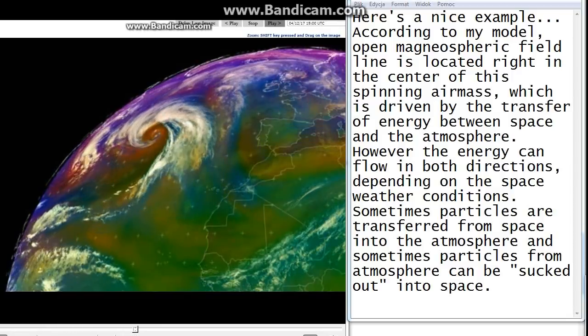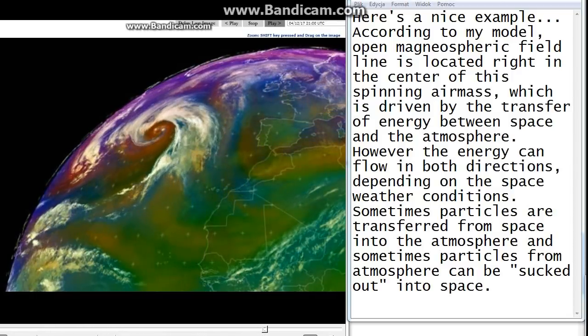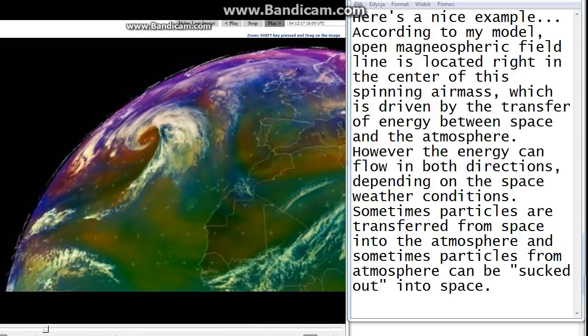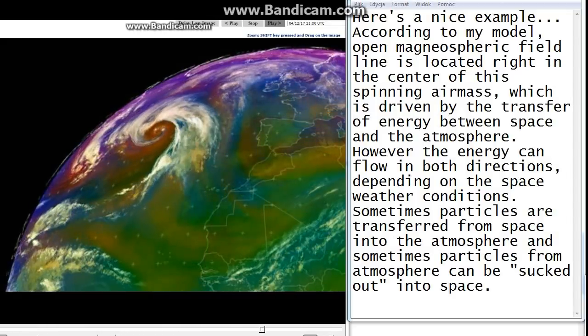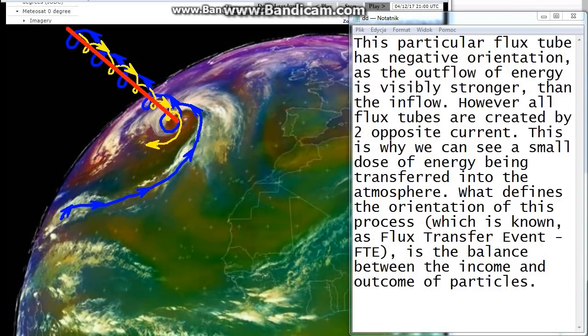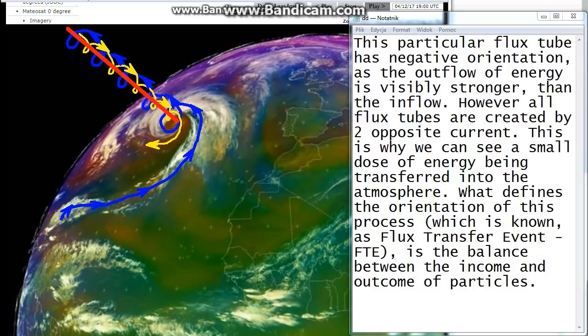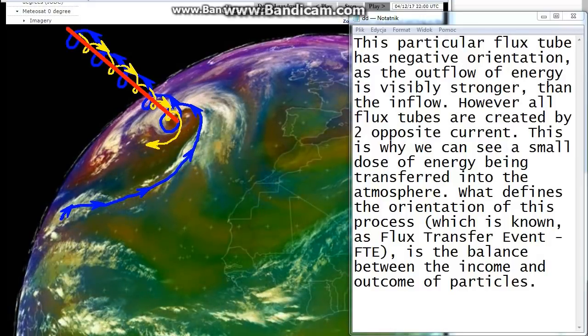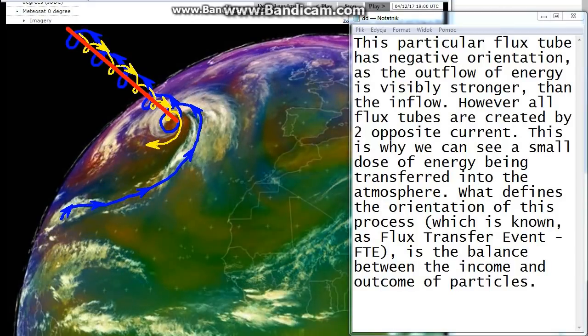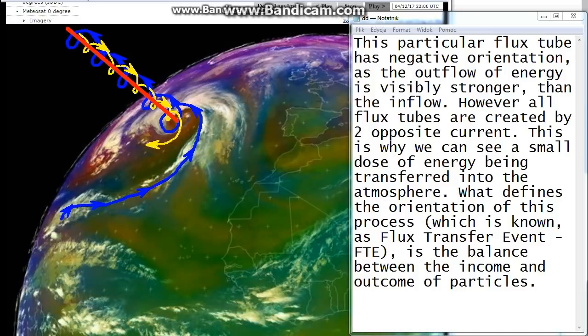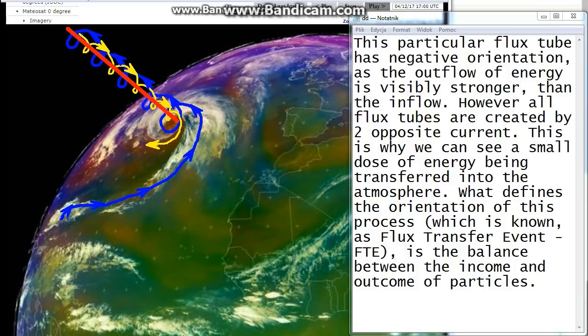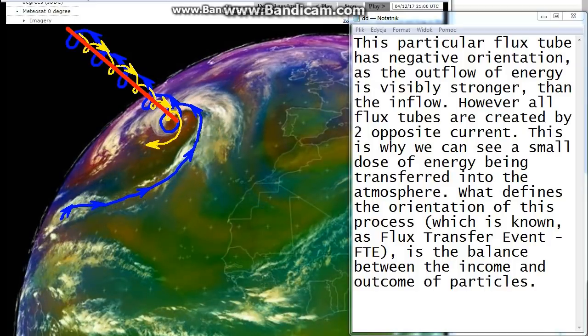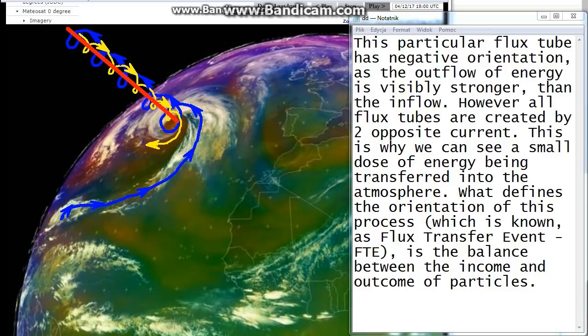However, the energy can flow in both directions, depending on the space weather conditions. Sometimes particles are transferred from space into the atmosphere and sometimes particles from atmosphere can be sucked out into space. This particular flux tube has negative orientation, as the outflow of energy is visibly stronger than the inflow. However, all flux tubes are created by two opposite currents. This is why we can see a small dose of energy being transferred into the atmosphere. What defines the orientation of this process, which is known as flux transfer event, FTE, is the balance between the income and outcome of particles.